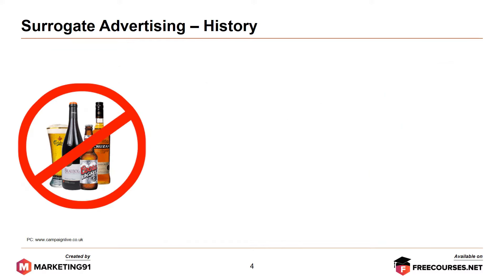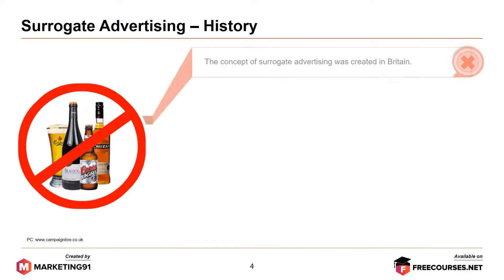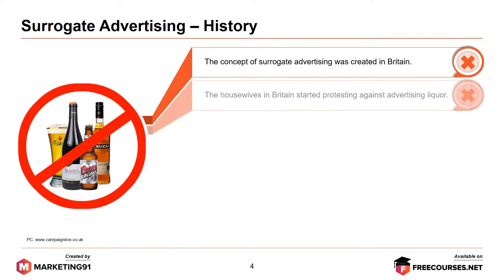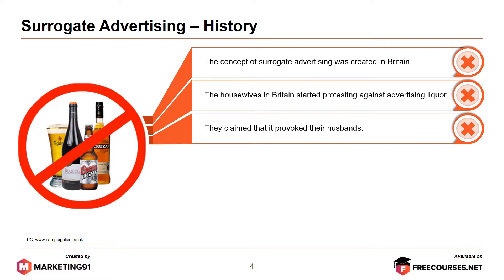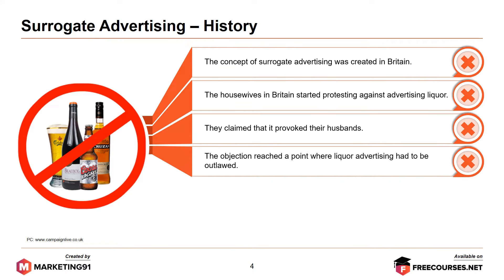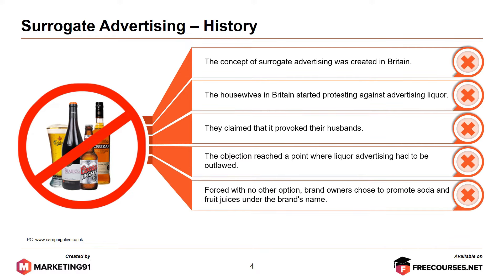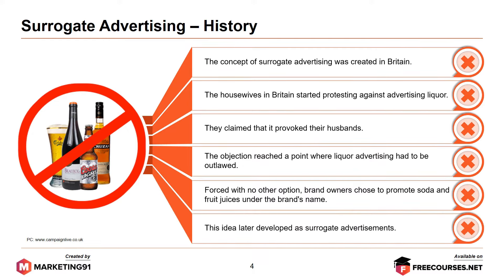The history of surrogate advertising: the concept was created in Britain. Housewives in Britain started protesting against advertising liquor, claiming that it provoked their husbands. The objection reached a point where liquor advertising had to be outlawed. Forced with no other option, brand owners chose to promote soda and fruit juices under the brand's name. This idea later developed as surrogate advertisements.